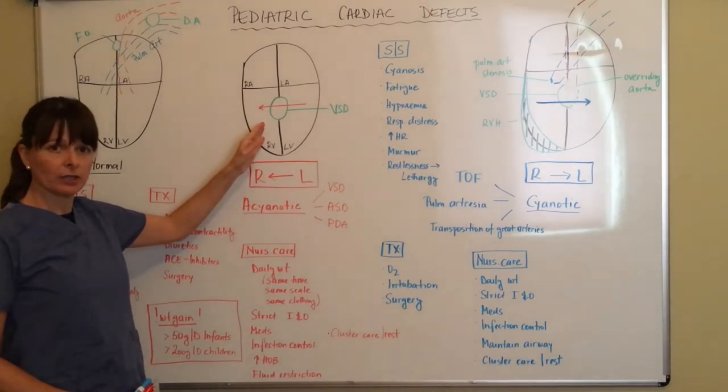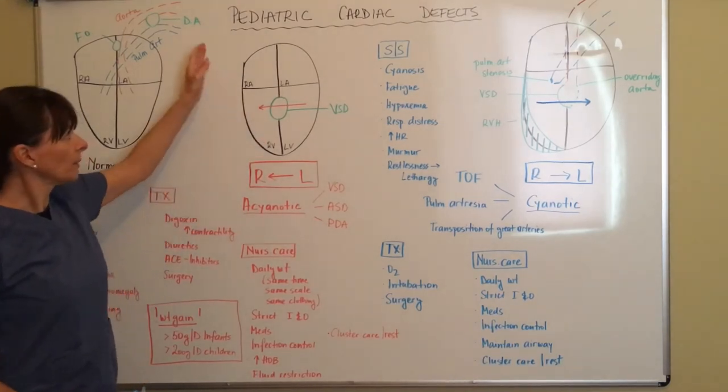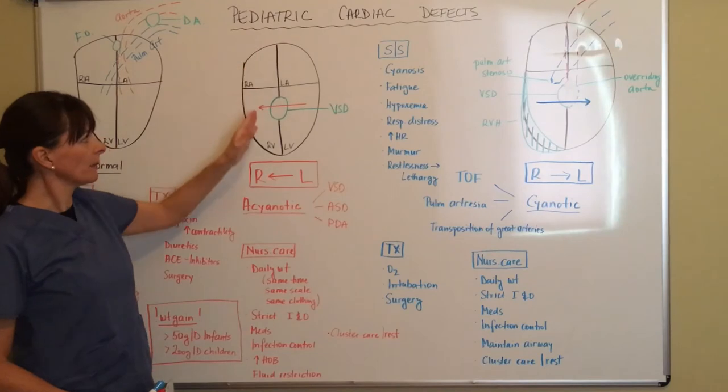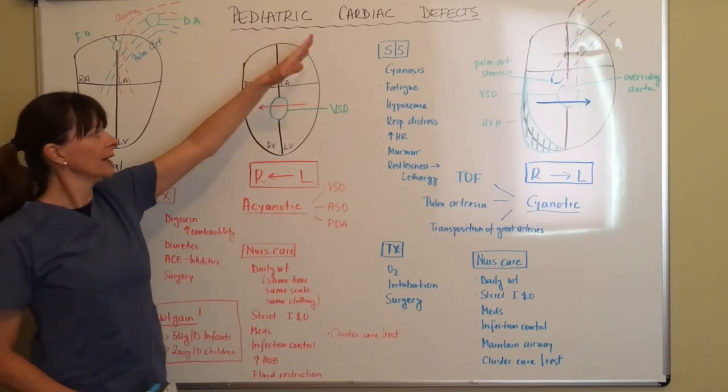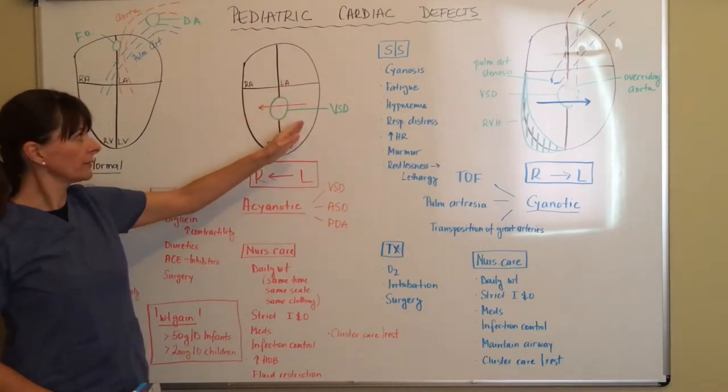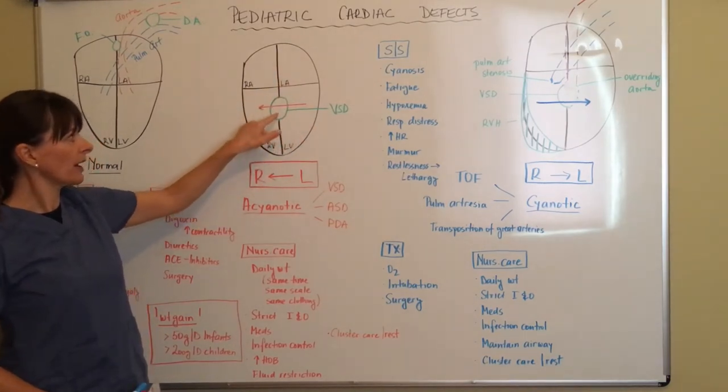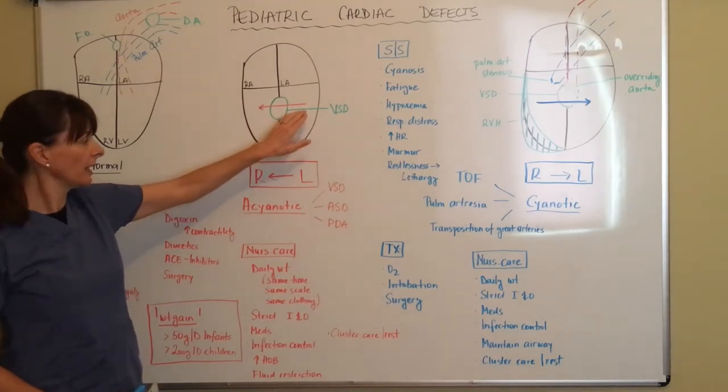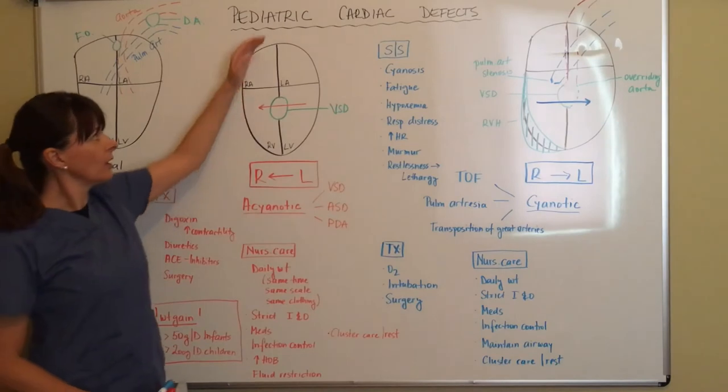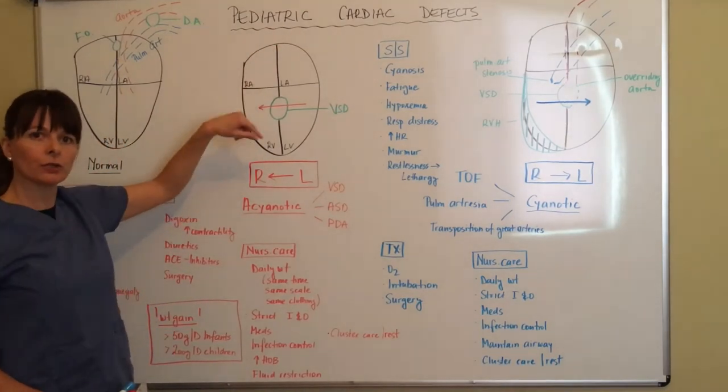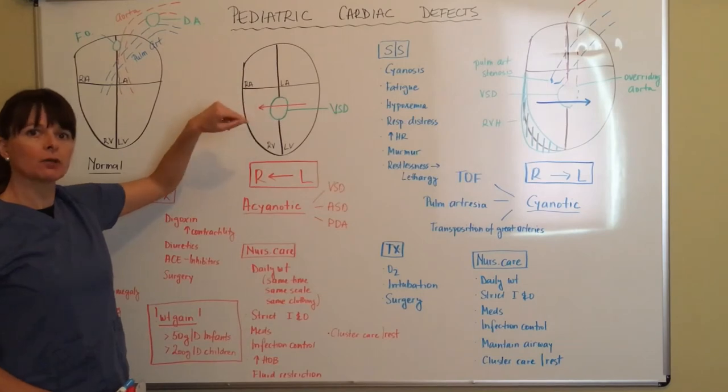So basically, in ventricular septal defect, the blood will come in through the right atrium, into the right ventricle, will go to the lungs. There might be a little bit of flow over to the left ventricle. The blood returns from the lungs to the left atrium, to the left ventricle. And then because we have this abnormal opening here, and we have a higher pressure on the left side, the blood will flow back into the right ventricle and send it back to the lungs again. So the blood will circulate to the lungs multiple times.